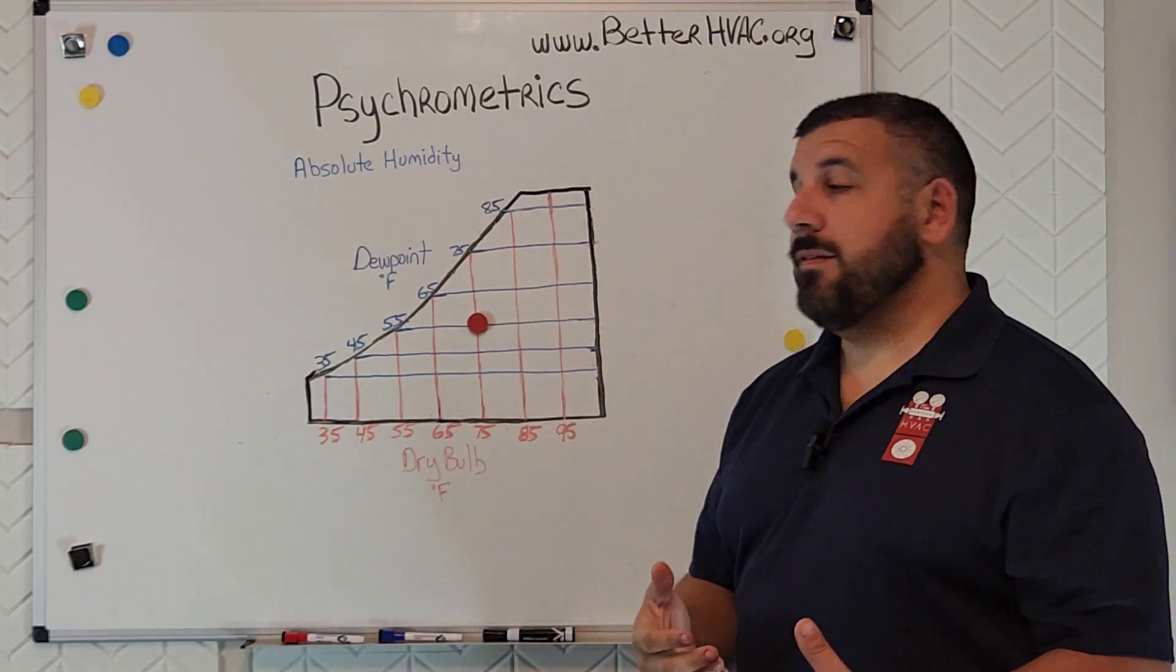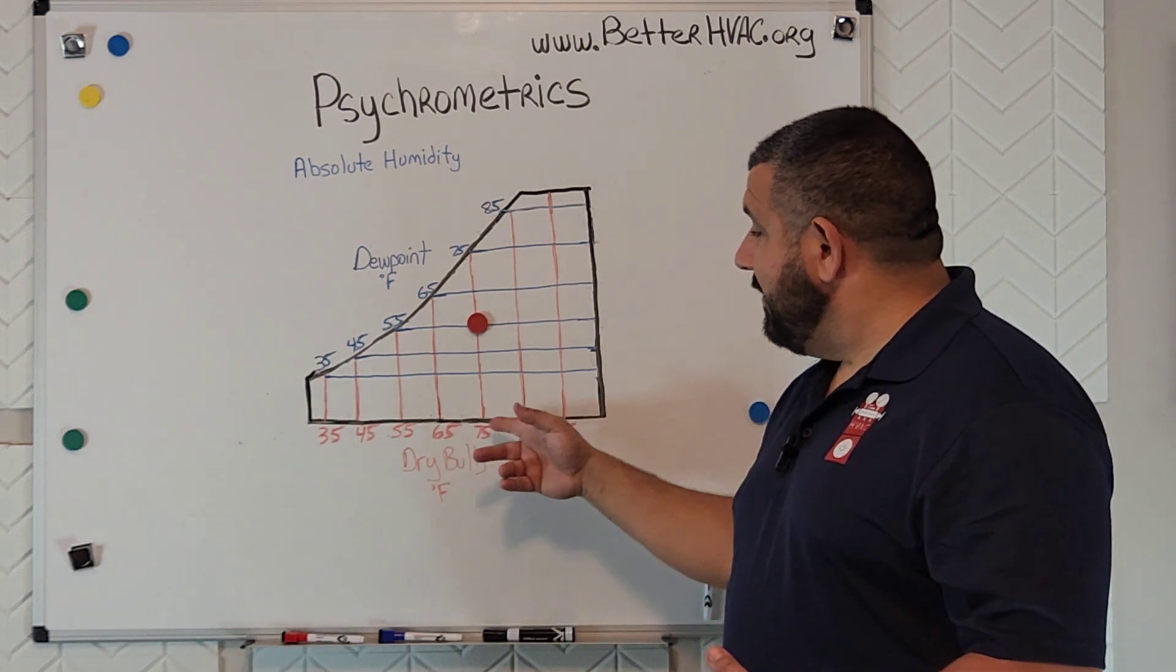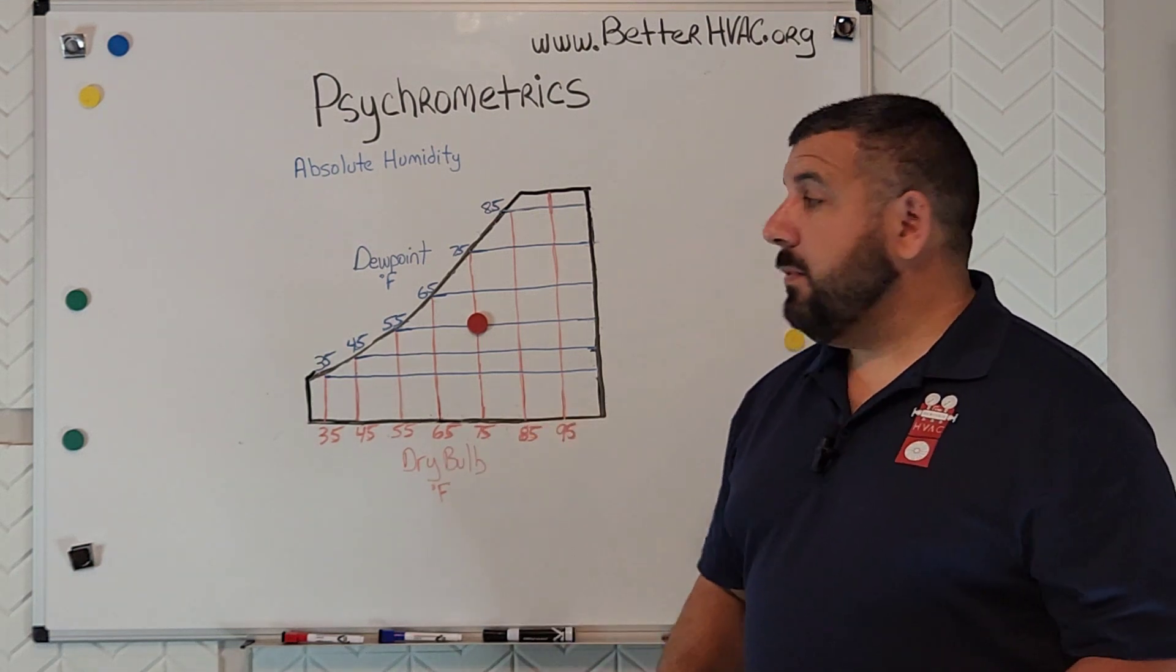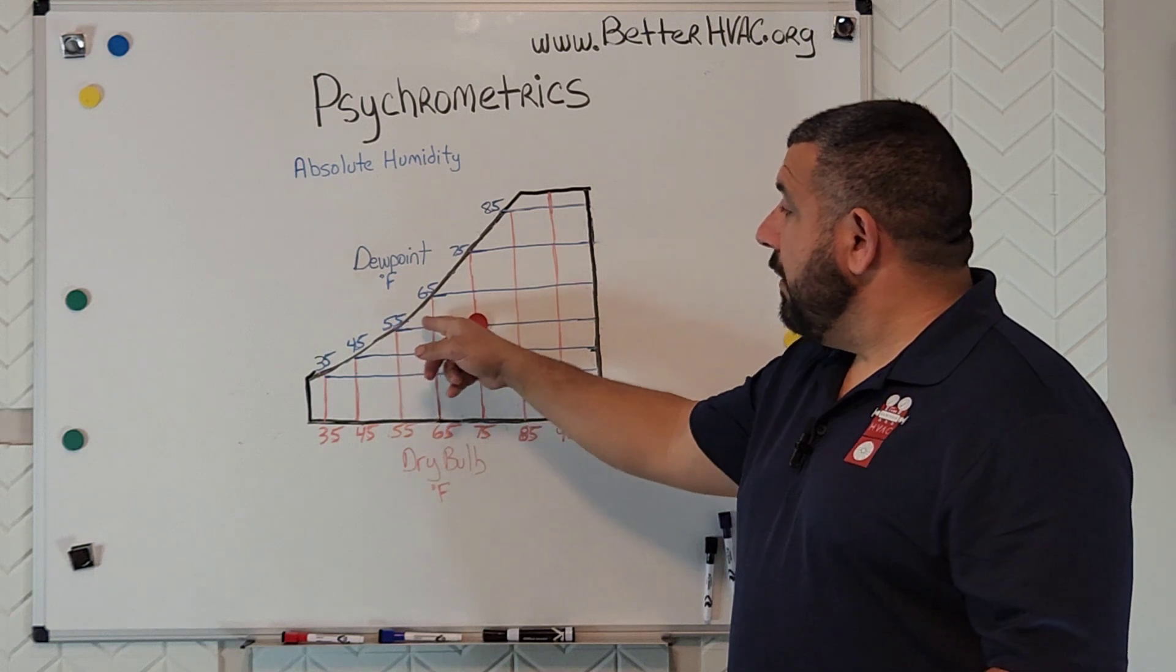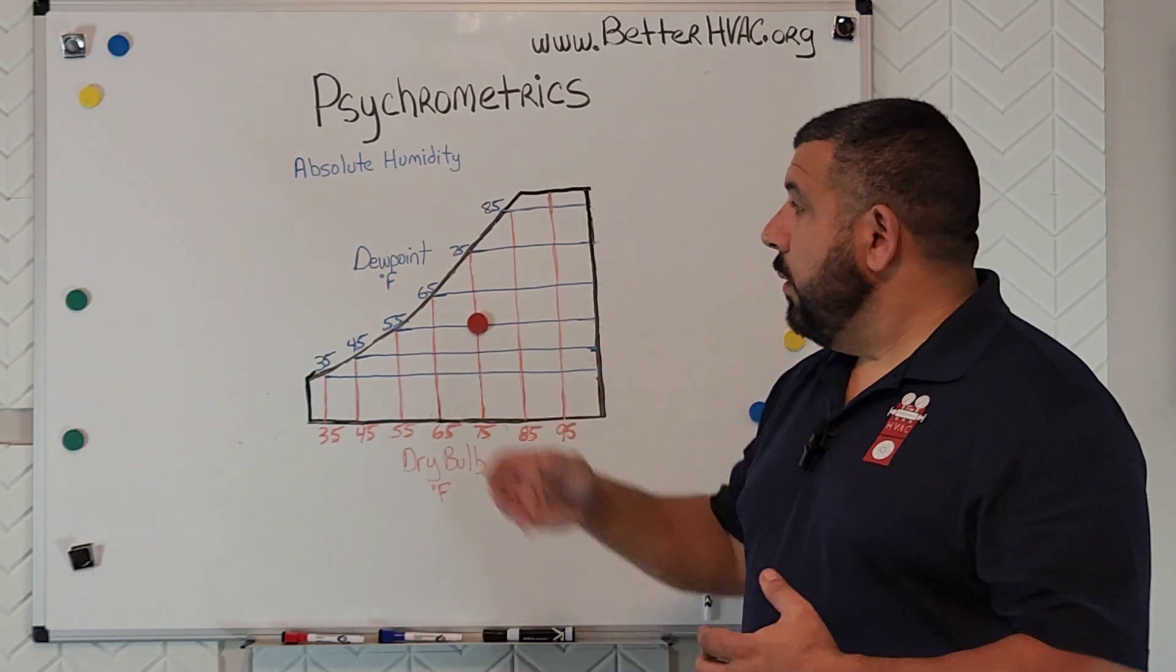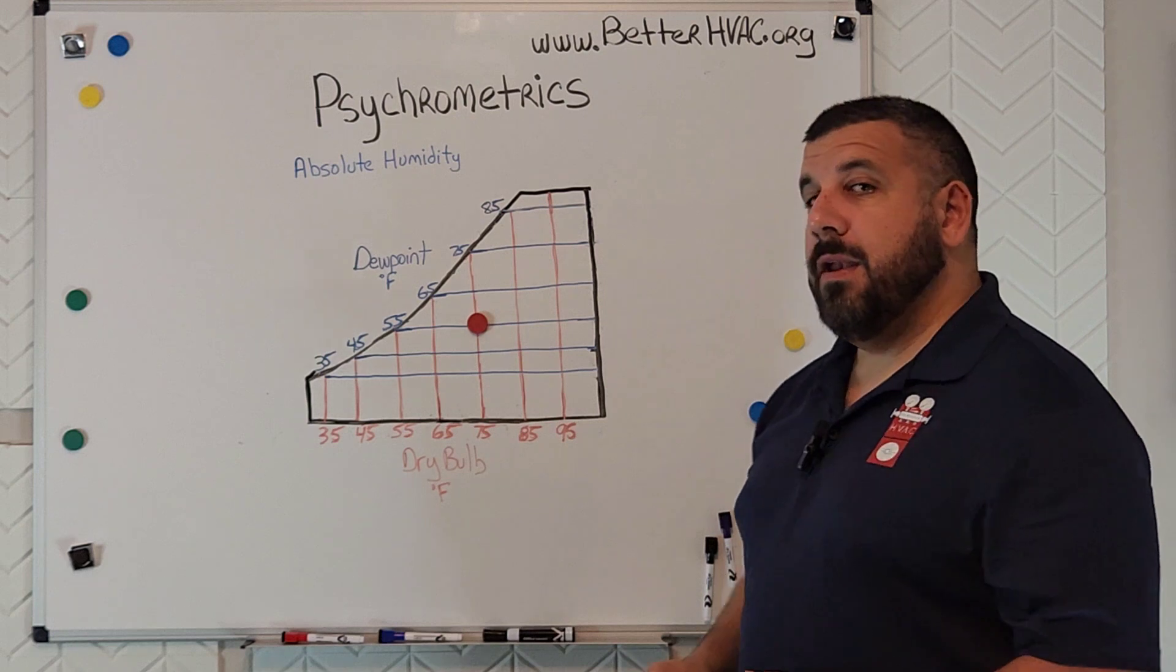And that is really our target comfort level. When we're designing a system, we want to be able to maintain 75 degree dry bulb temperature in the summertime and somewhere around a 55 degree dew point when we're talking about absolute humidity.